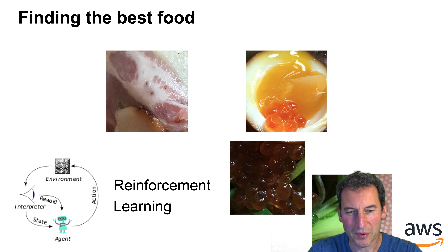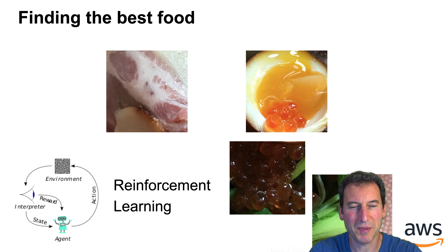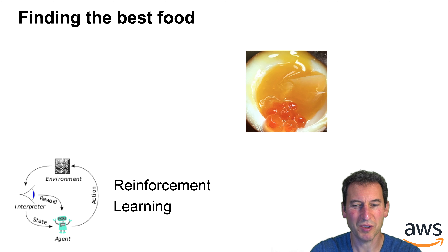Now if we use reinforcement learning, what you would do is again cook a dish, update your actions to adapt to the environment, and keep on doing this. You end up with better and better dishes, and maybe this time it's eggs because eggs are healthy.